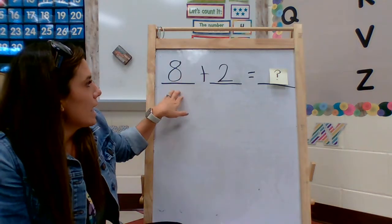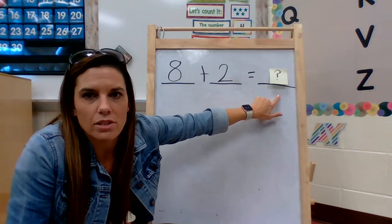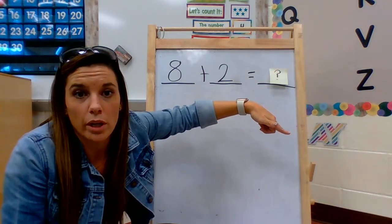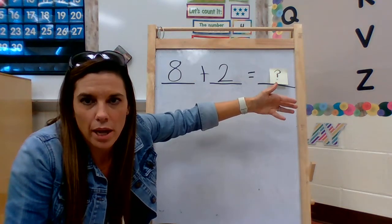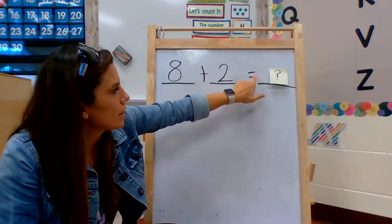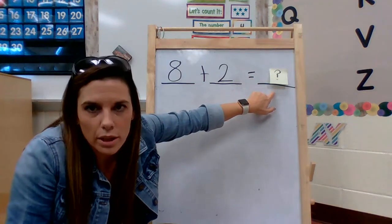So, we have 8 plus 2 equals what part do we have to figure out? We have to figure out the sum, or the total. When we have an equation, the number that comes after the equal sign is the sum, or it's the total number.